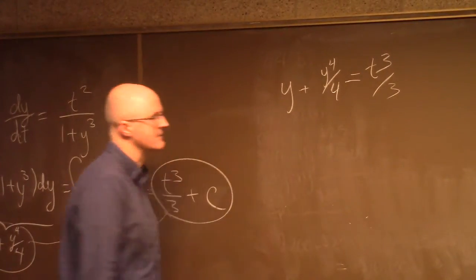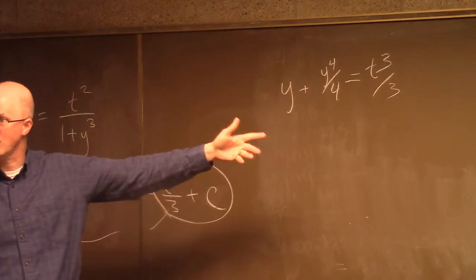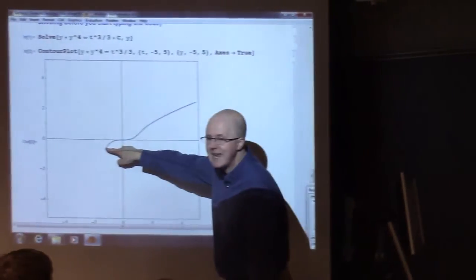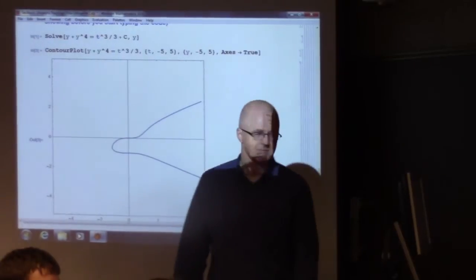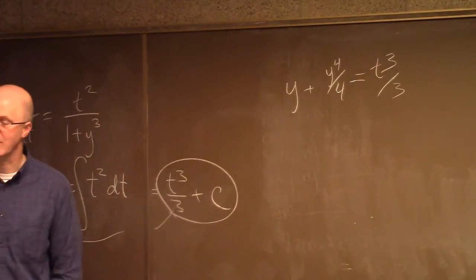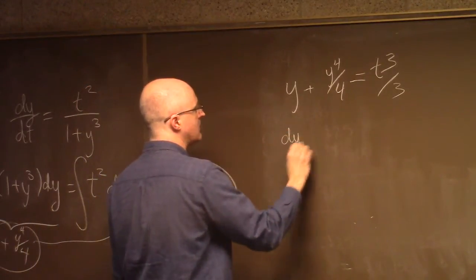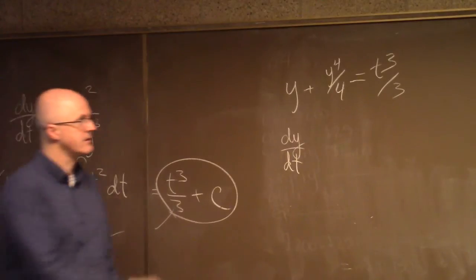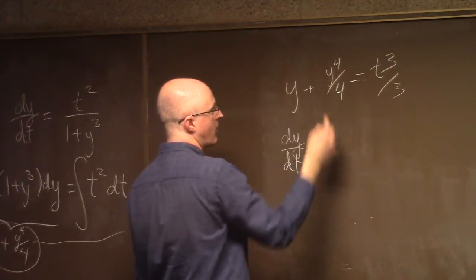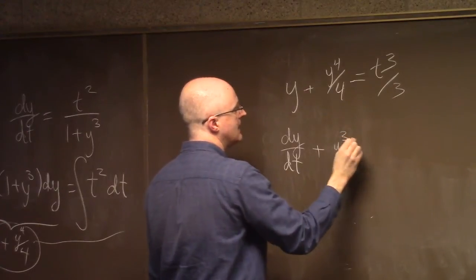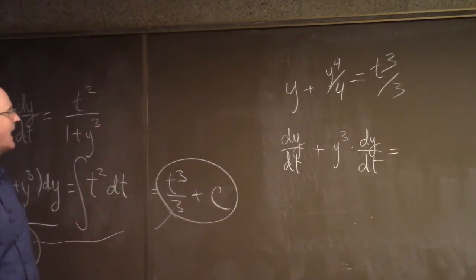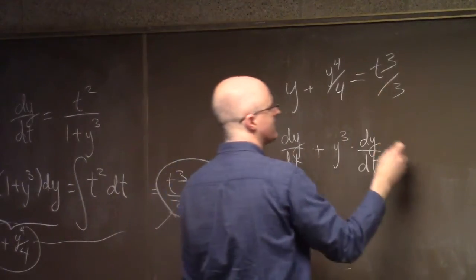You can pretend this equation implicitly defines y as a function of t near some point. It does as long as you're not at a place where the tangent is vertical. You can differentiate both sides with respect to t—the derivative of y with respect to t is not zero because I'm assuming y is a function of t. You need the chain rule: bring the 4 down in front, 4 divided by 4 is 1, you get y³, but then the derivative of the inside function is dy/dt. This leads us back to the differential equation.